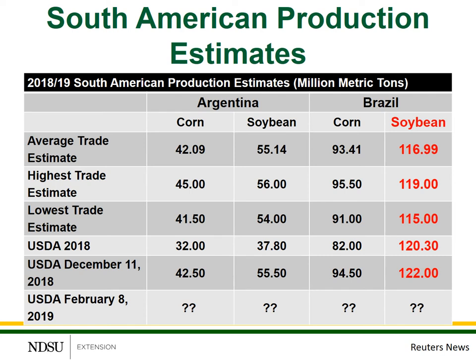The average trade estimate is for about 117 million metric ton production out of Brazil this year. This compares to last year's number of about 120 million metric ton and the December estimate from USDA at 122 million metric ton. The range is relatively narrow, from 115 to 119 million metric ton. These range of estimates have slowly been slipping over the last several months. We had originally expected very large production out of Brazil, but because of some weather problems, which we'll take a look at in just a moment, this average estimate for total production out of Brazil is slowly dropping.